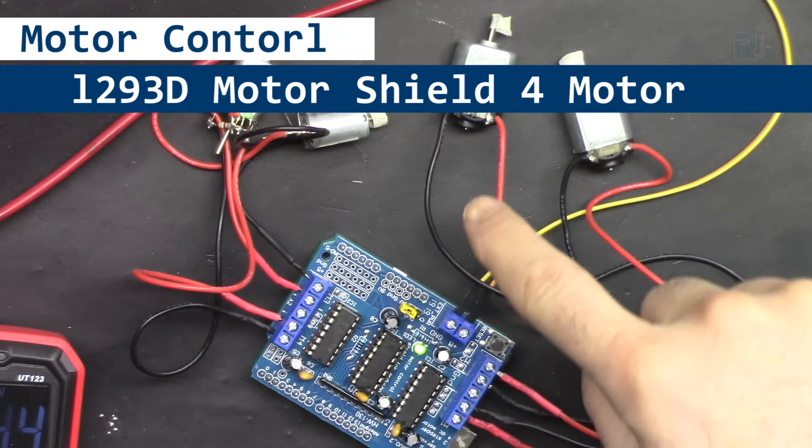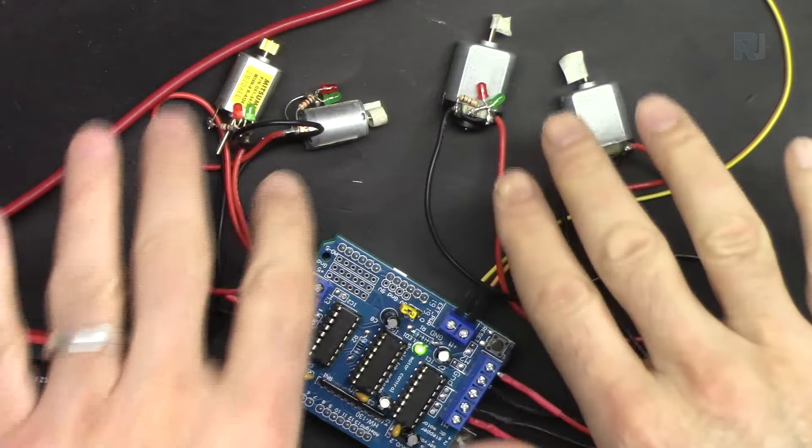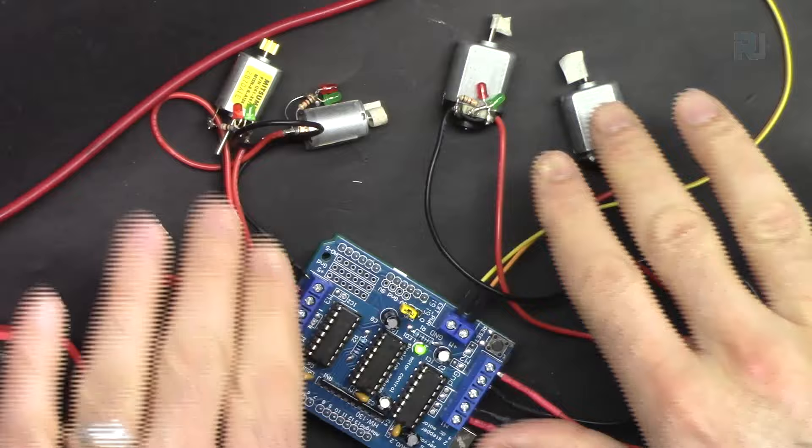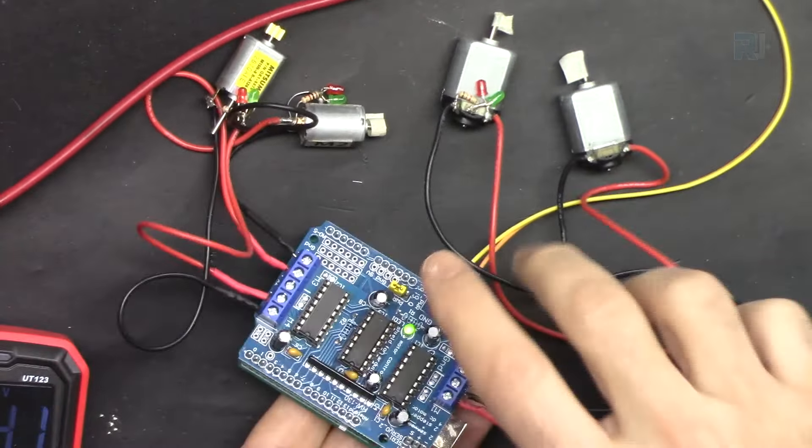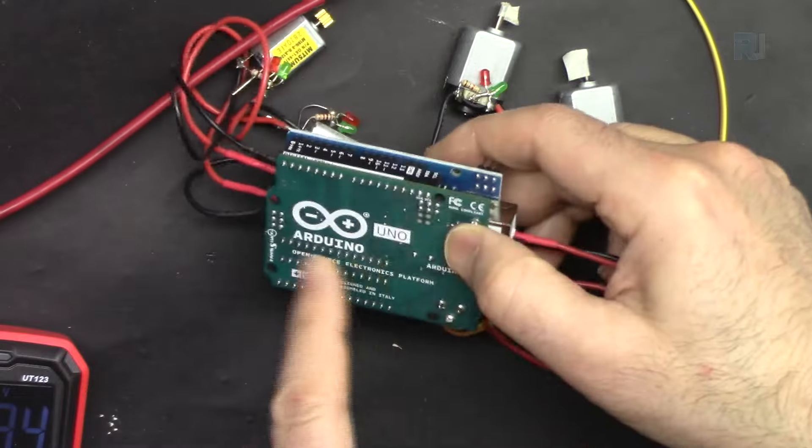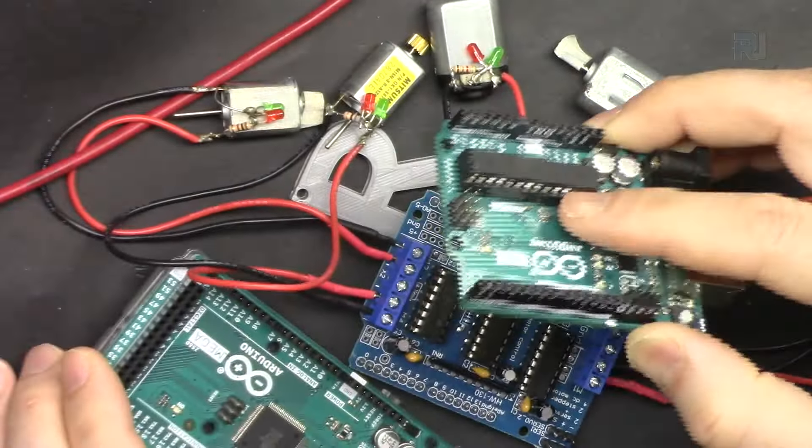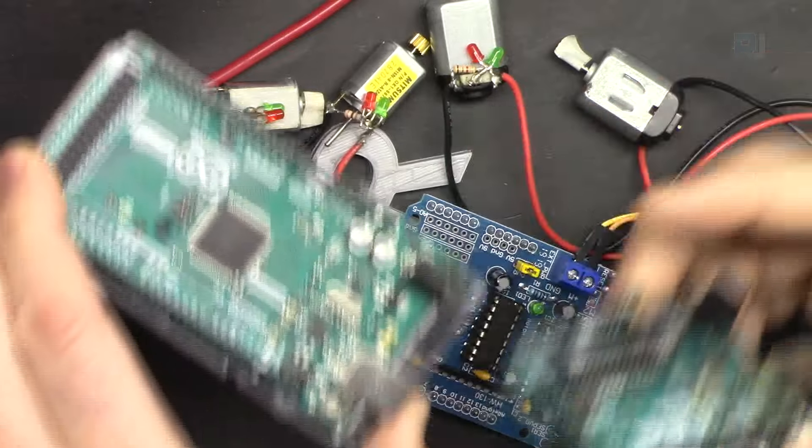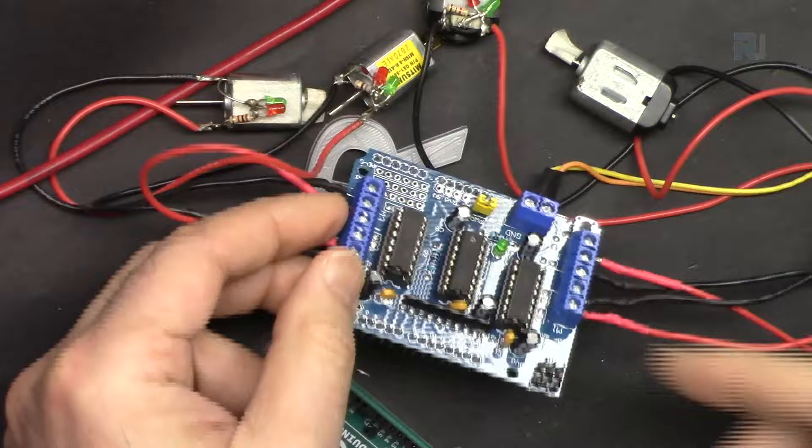In this video we're going to learn how to control four DC motors that you might need to use for a robot car or any other application using L293D motor shield with Arduino. This is Arduino Uno motor shield. I'm going to demonstrate and show you how to use it with Arduino Uno and also Arduino Mega. In both cases this shield can be used.